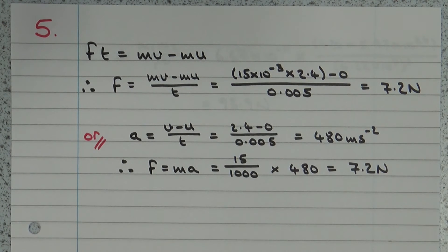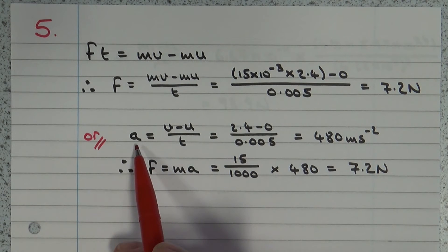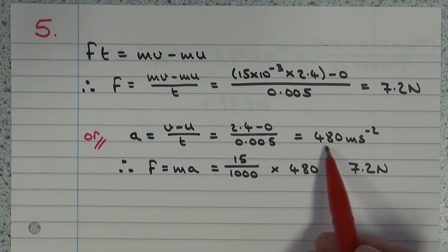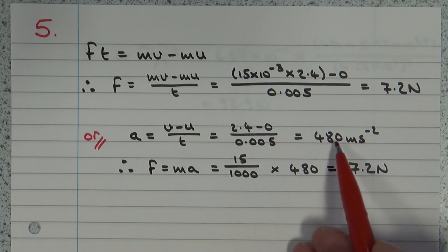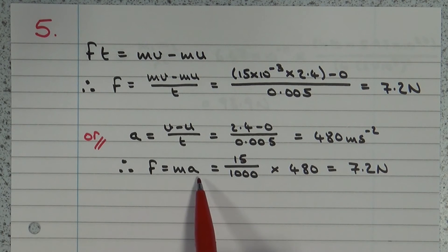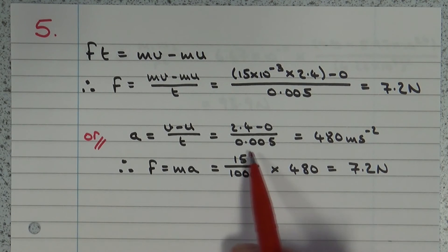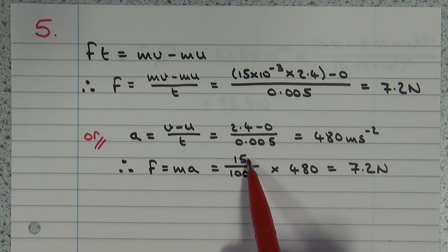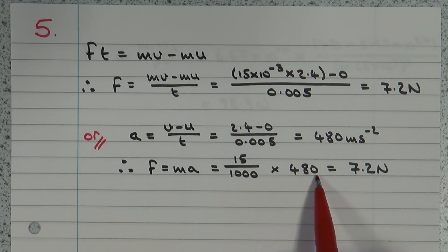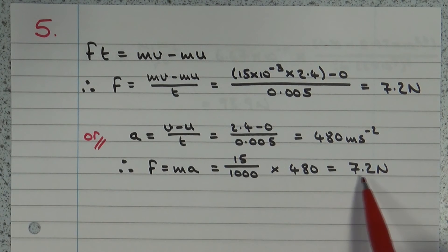An alternative method is to work out the acceleration first: a = (v − u) / t = 480 ms⁻², then plug that into F = ma. The mass of 15 grams divided by 1000 gives kilograms, multiplied by the acceleration. No surprise — we get the same value of force: 7.2 newtons.